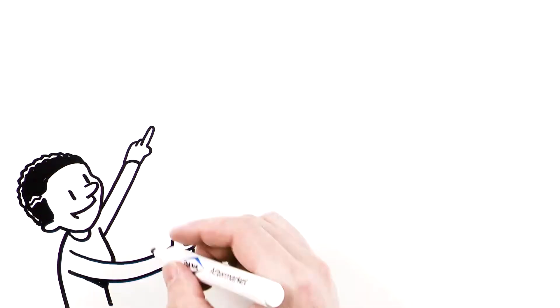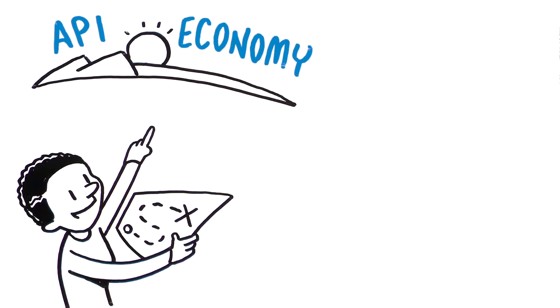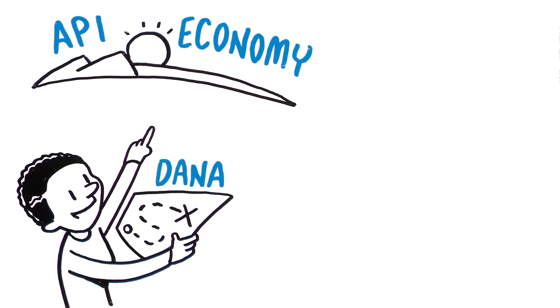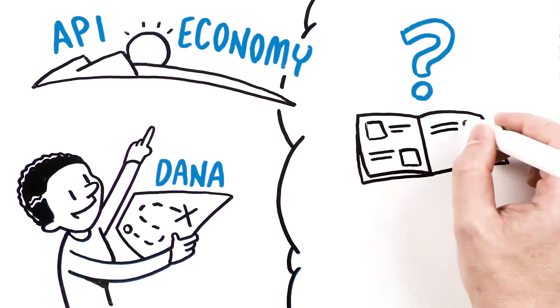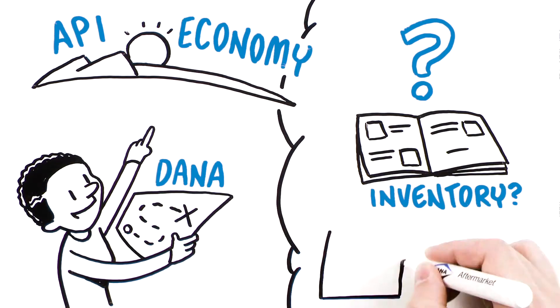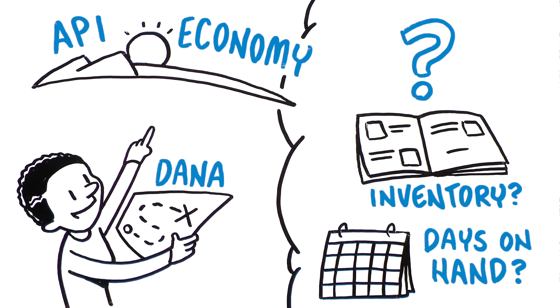She's heard that the future of sales enablement is the API economy and knows Dana offers API streaming and support, but what does an API do? And how can she leverage APIs to rethink her inventory, optimize her days on hand, and more?